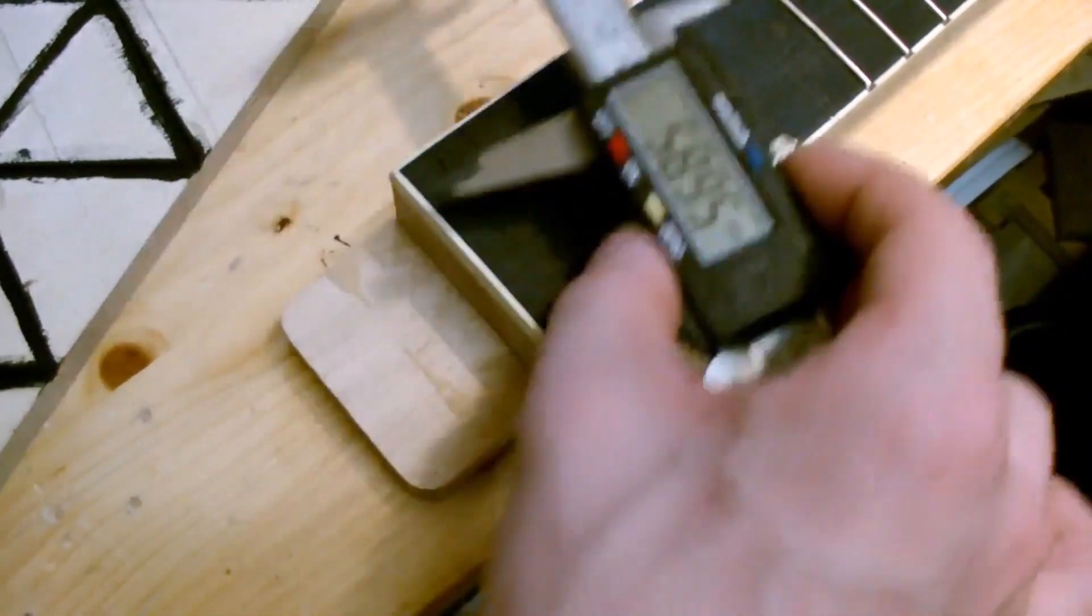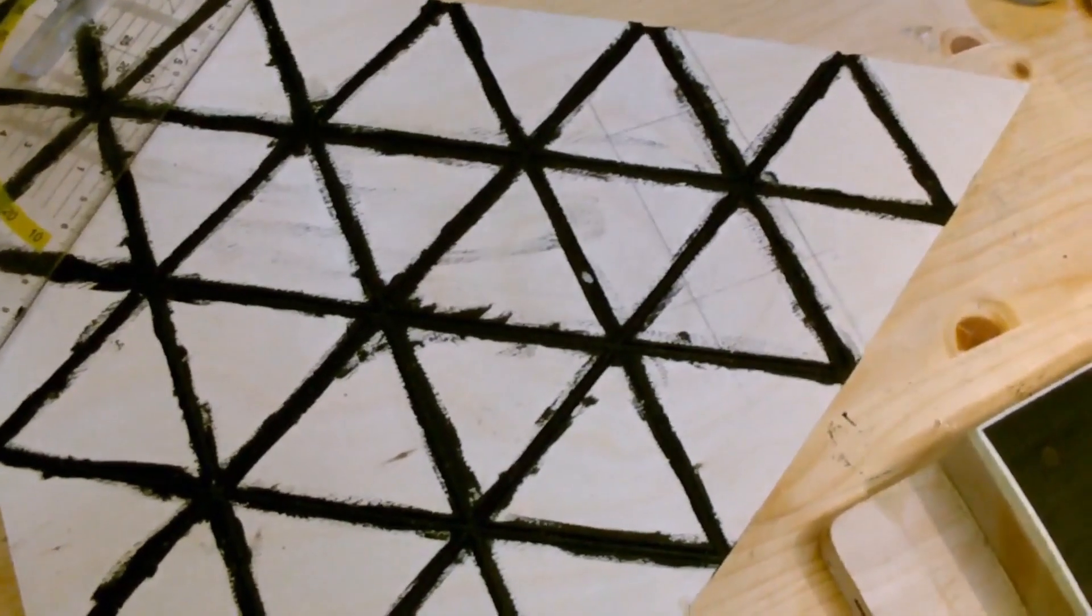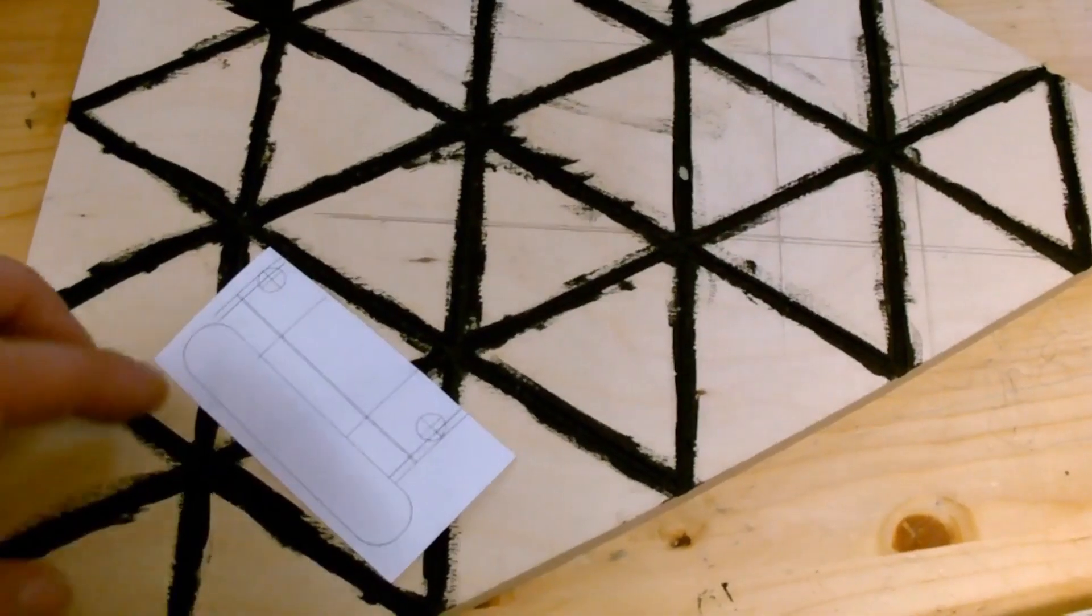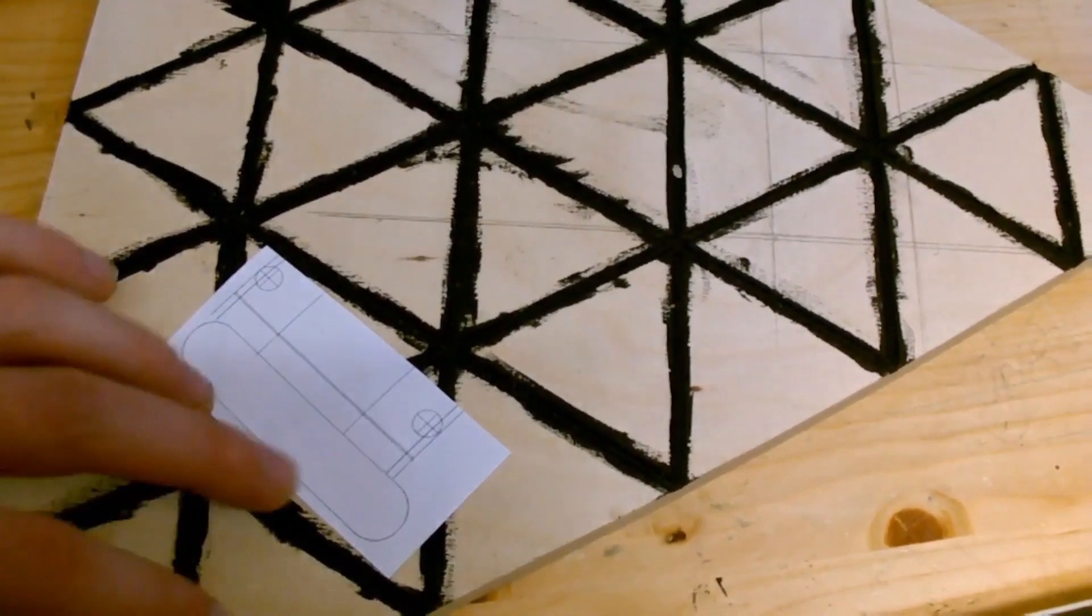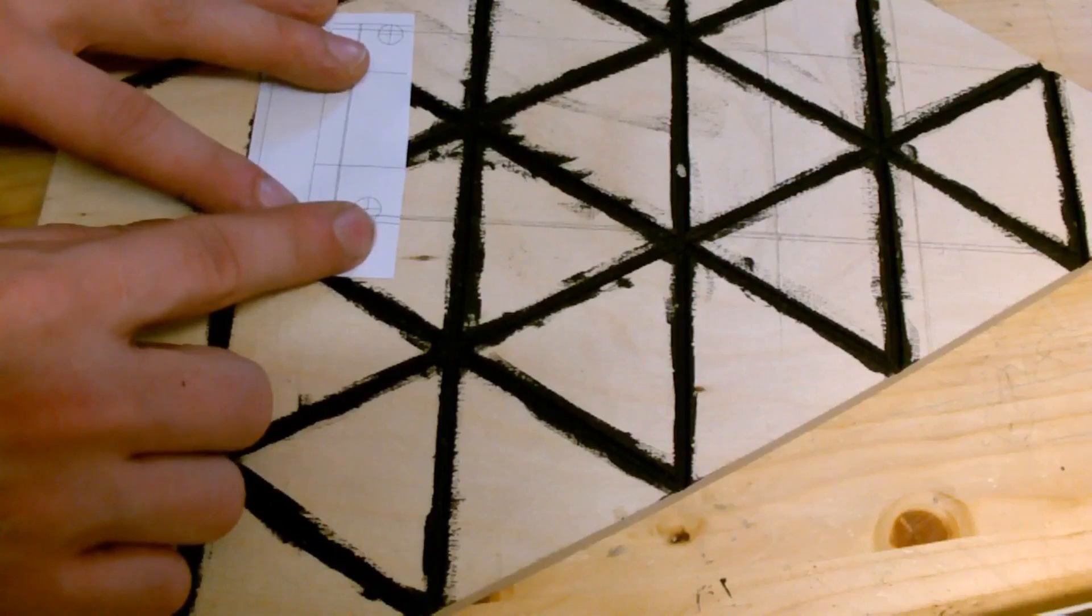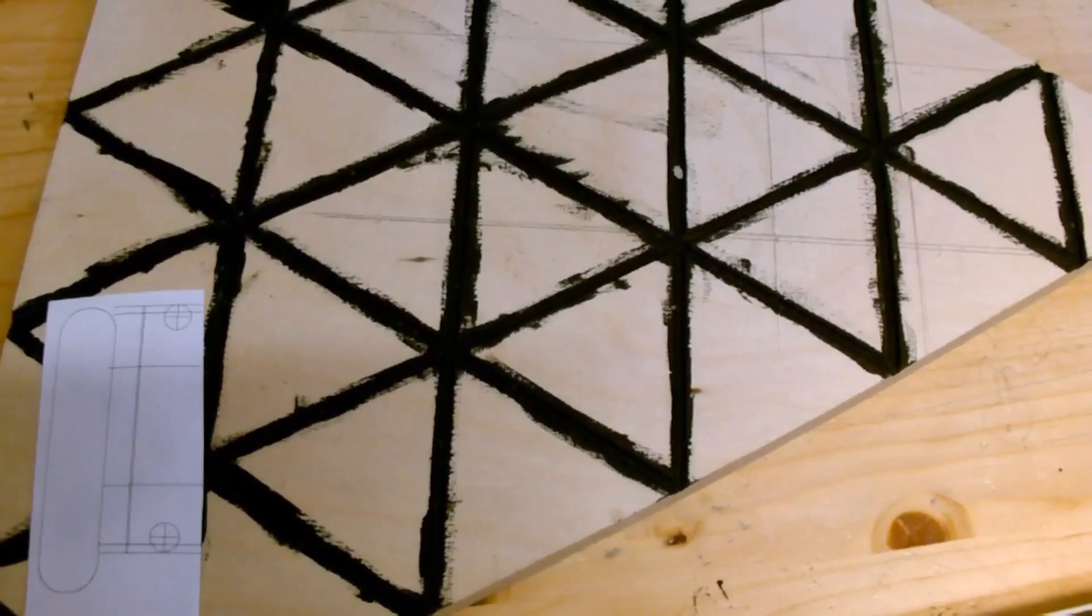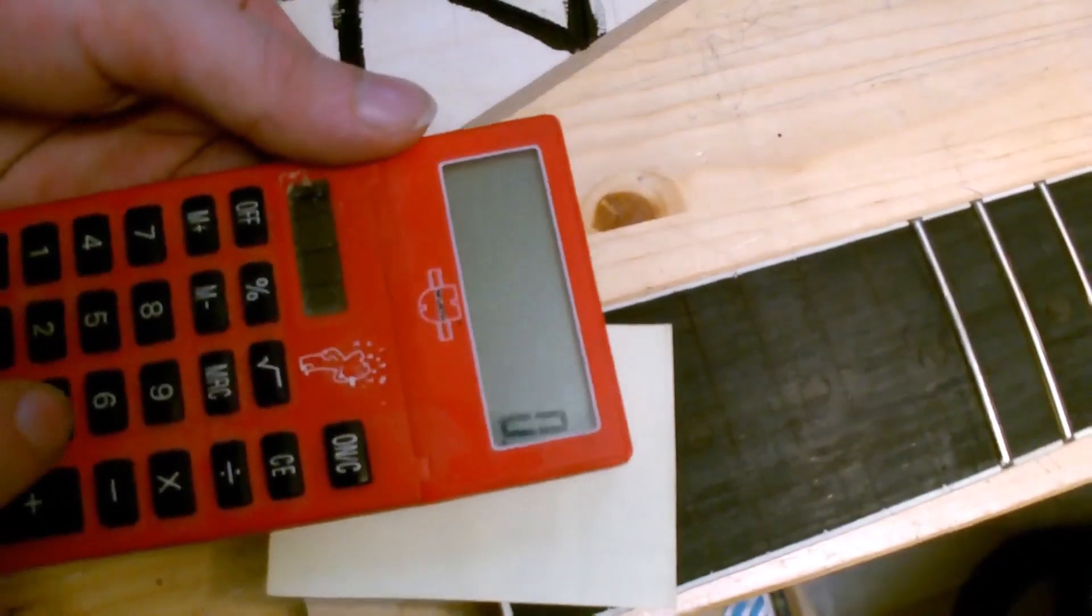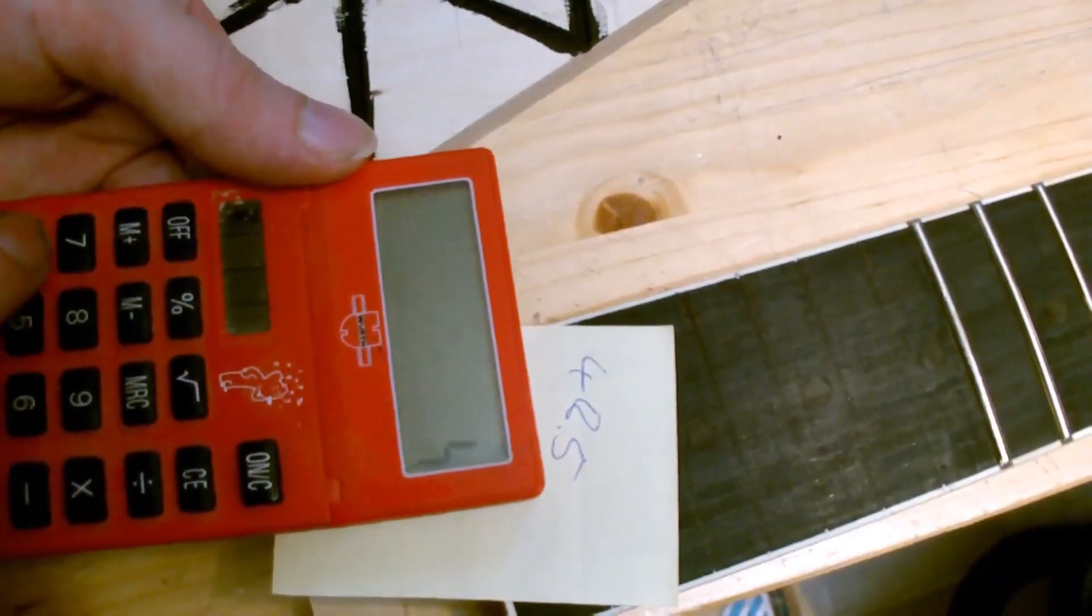After measuring the width of the neck, I marked the center and transferred it to the wood. The same width was printed onto the template to ensure a nicely centered whammy bar bridge. I subtracted the scale length from the neck length and aligned the template accordingly.